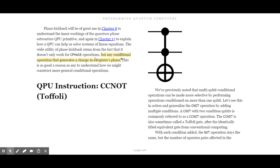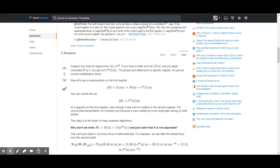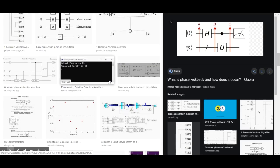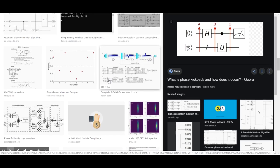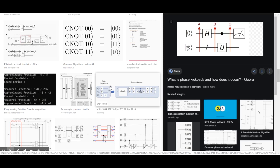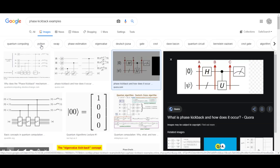The wide utility of phase kickback stems from the fact that it does not only work for C-phase but any conditional operation that generates a change in a register's phase. I even marked that when I was reading this. There's a good reason to understand how we might construct more general conditional operations. That's definitely pretty cool, but I can't find anything else. It seems like there's no real need to actually dive into this further.